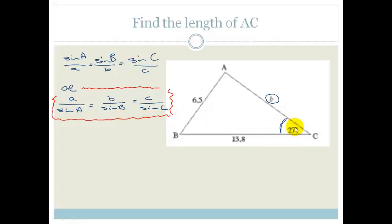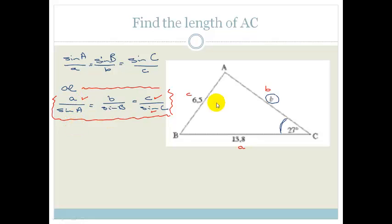The side opposite the angle is always given by the little letter. So this would be little letter C, this little letter A, and as written, this is little letter B. We have the length of C which is 6.5, and angle C which is 27 degrees. We also have the length of A. We want the length of B, but we don't have angle A or angle B.